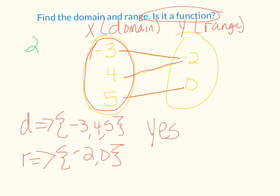Now, a couple things. Just show you an example. Let's say the negative 3 also went to the 0. Now, the negative 3 goes to the negative 2, and it goes to a 0. So this would not be a function because the negative 3 is used twice.